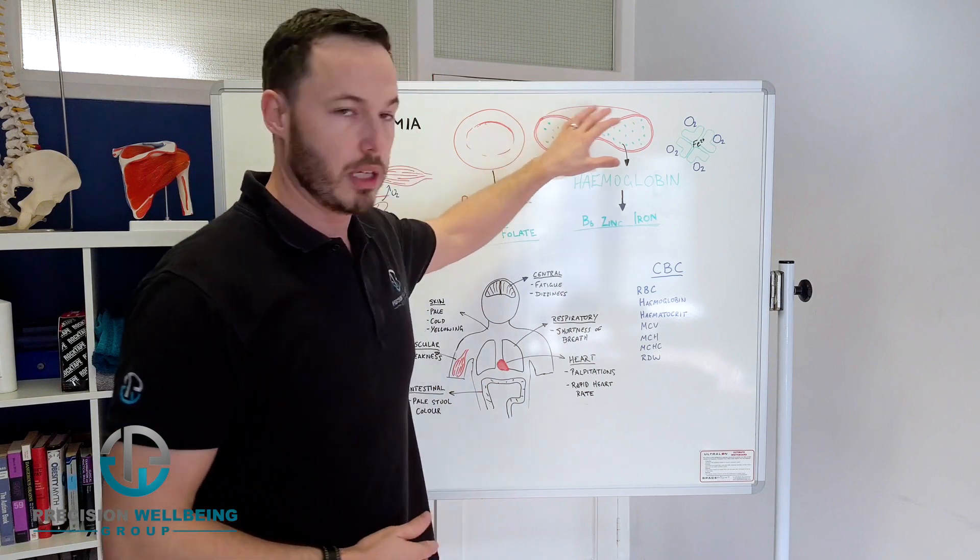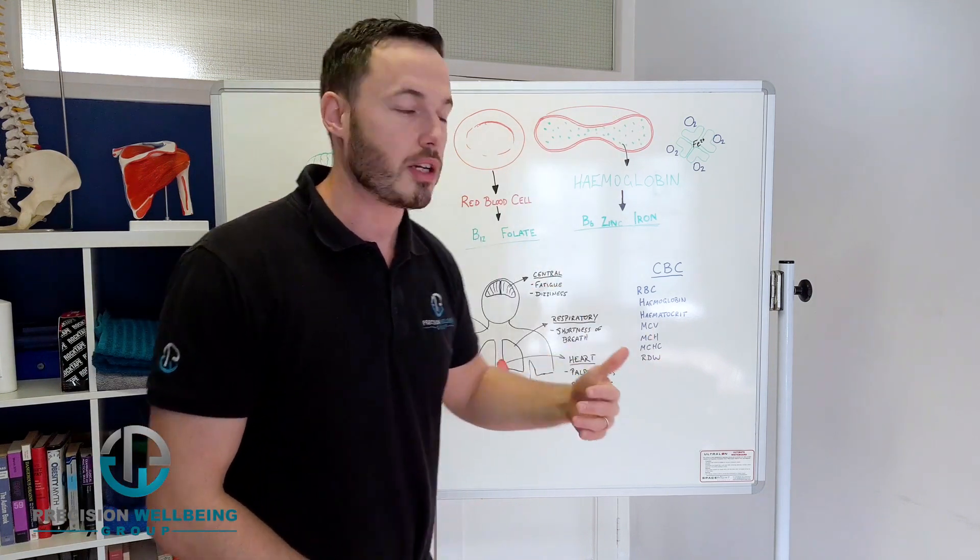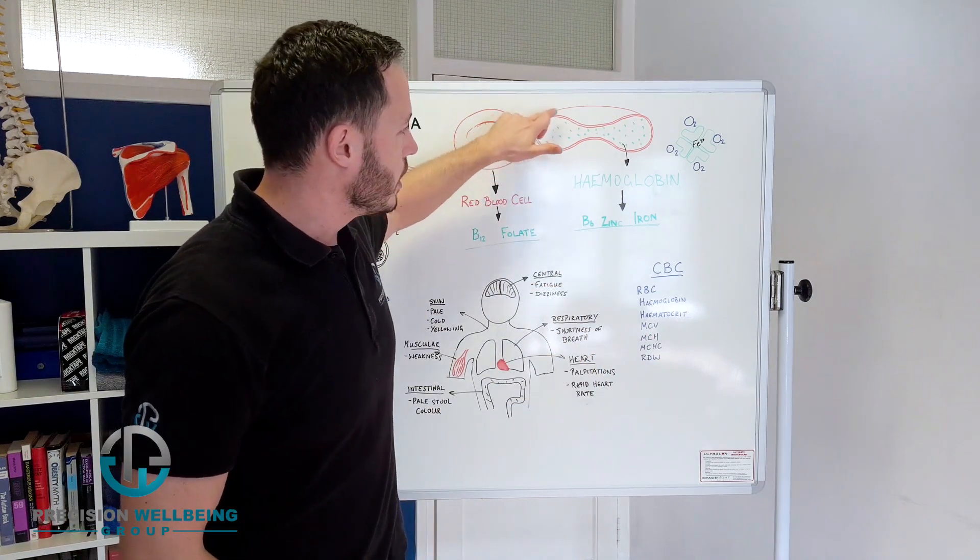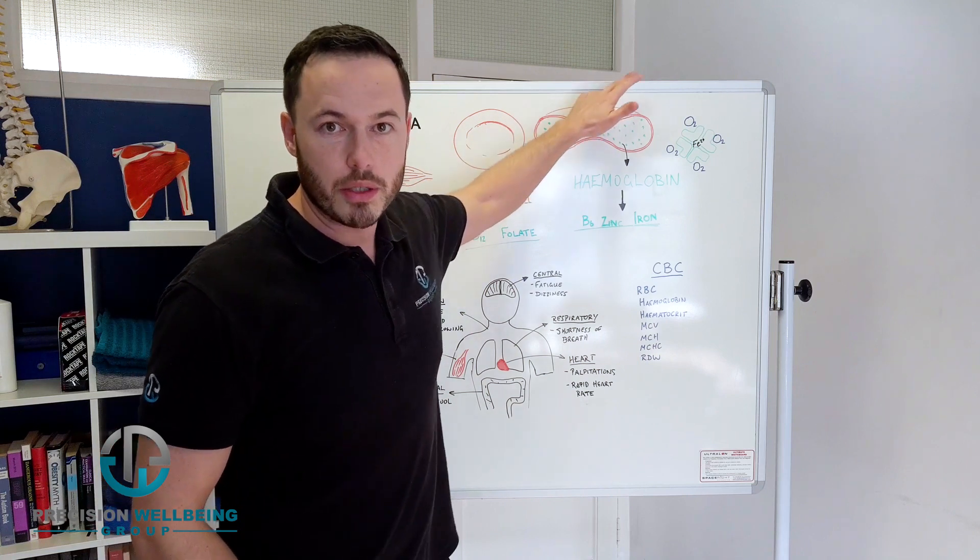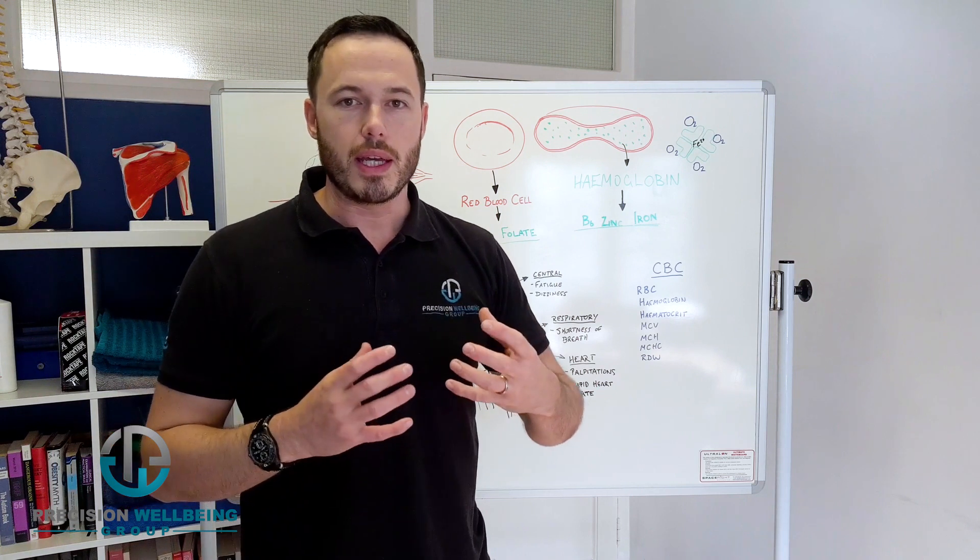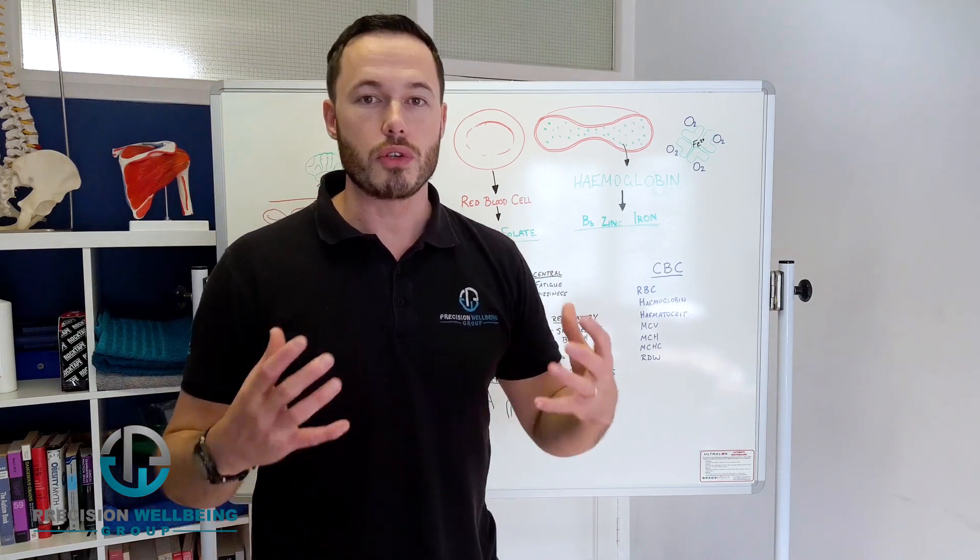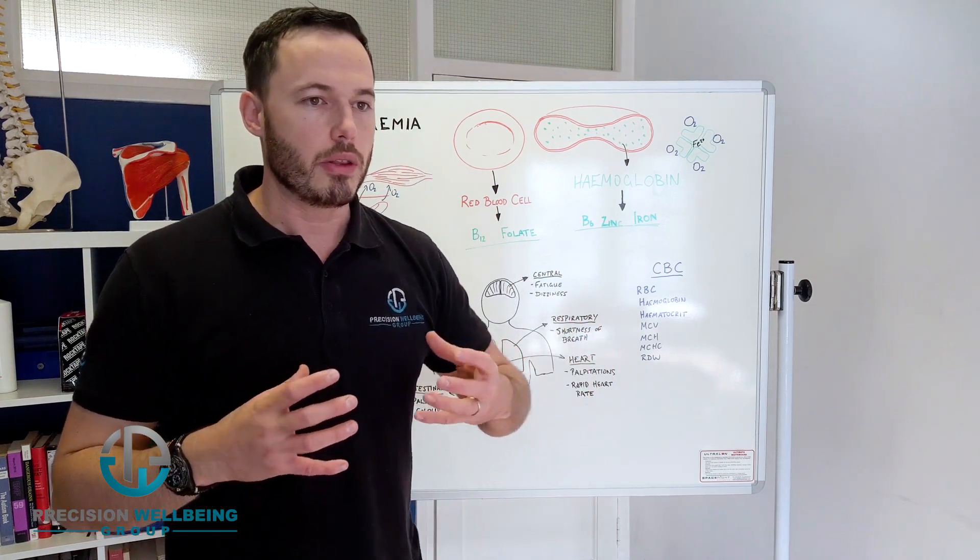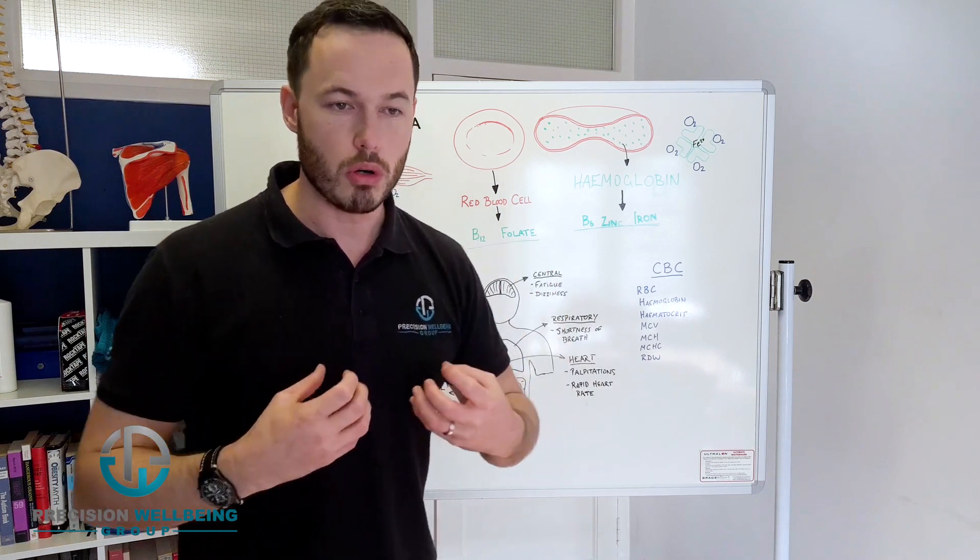So if we cut it in half and we look at it from that cut section, what we'll see is that it dips towards the middle and then comes back out thicker on the outside. And the reason for that is just to create a little bit more surface area so these cells can carry more oxygen.